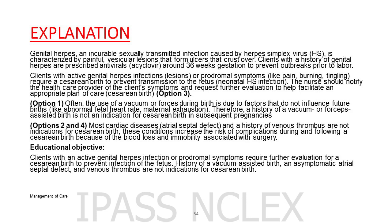Option 1: often, the use of a vacuum or forceps during birth is due to factors that do not influence future births, like abnormal fetal heart rate or maternal exhaustion. Therefore, a history of a vacuum or forceps-assisted birth is not an indication for cesarean birth in subsequent pregnancies. Options 2 and 4: most cardiac diseases (atrial septal defect) and a history of venous thrombus are not indications for cesarean birth. These conditions increase the risk of complications during and following a cesarean birth because of the blood loss and immobility associated with surgery. Educational objective: clients with an active genital herpes infection or prodromal symptoms require further evaluation for a cesarean birth to prevent infection of the fetus. History of a vacuum-assisted birth, an asymptomatic atrial septal defect, and venous thrombus are not indications for cesarean birth.